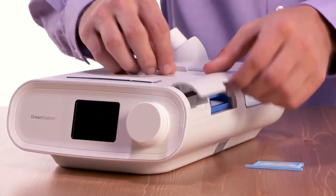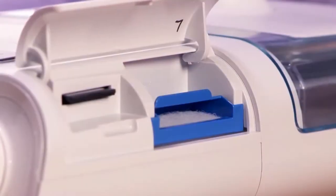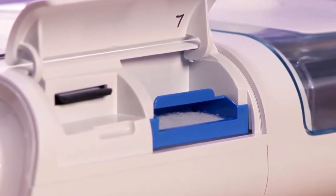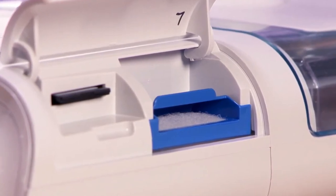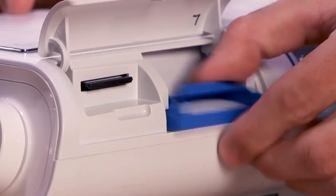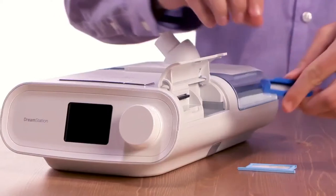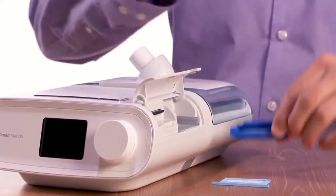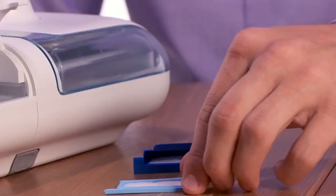Lift up on the filter access door and swing it open. Check to make sure a blue pollen filter is in place to screen out normal household dust and pollens. Remove the filter assembly. In addition to the reusable filter which comes installed in your DreamStation, there is a disposable ultrafine filter.